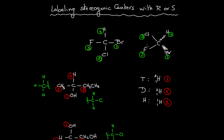Looking at the numbers — one, two, three, four — I'm going counterclockwise. Counterclockwise means S. S in Latin means 'sinister,' which means going to the left, or left-handed. By counting, we are rotating to the left side, which is counterclockwise.